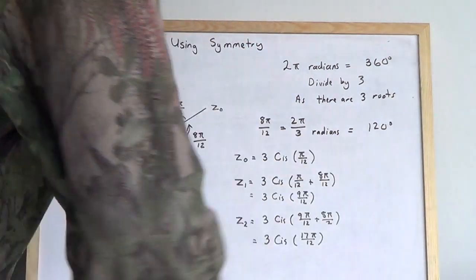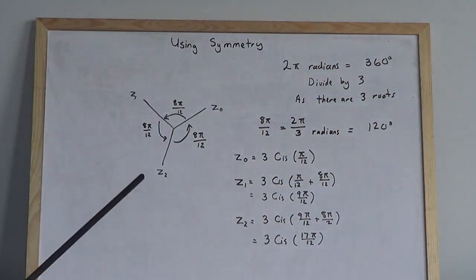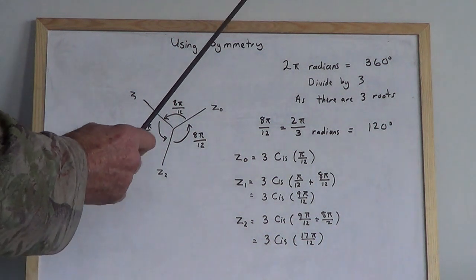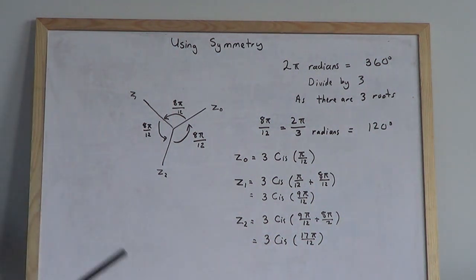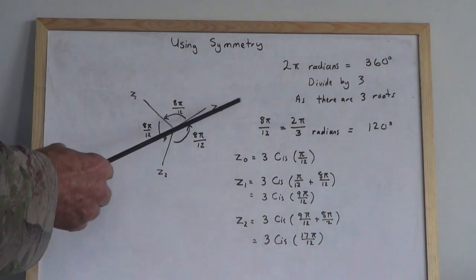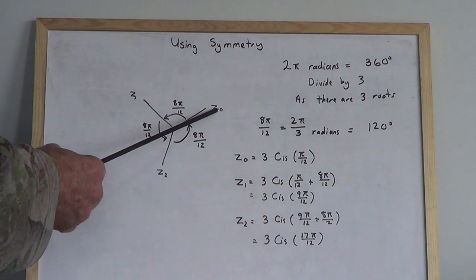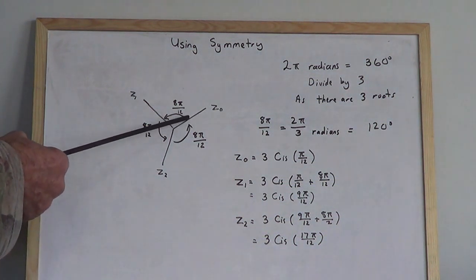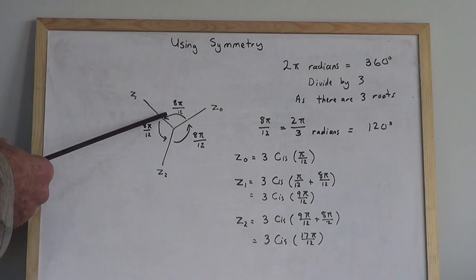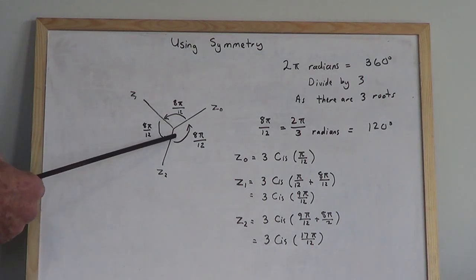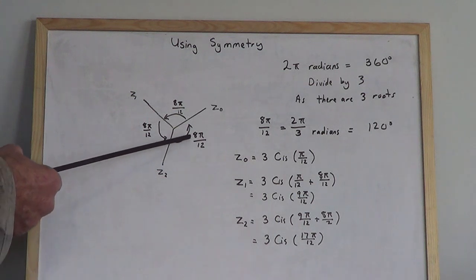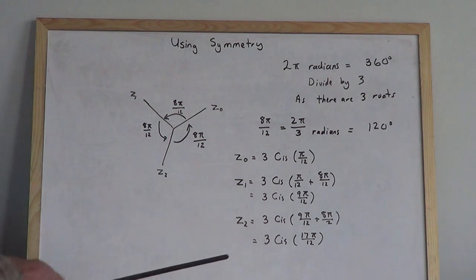Basically, I'm just going to use symmetry. The three roots are symmetrical. If z₀ is there, then you come around 8π/12 to z₁, 8π/12 to z₂, and 8π/12 back to z₀. Now where do I get the 8π/12? Let's go through it.